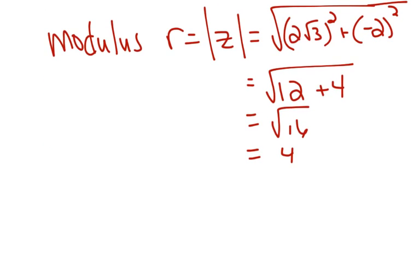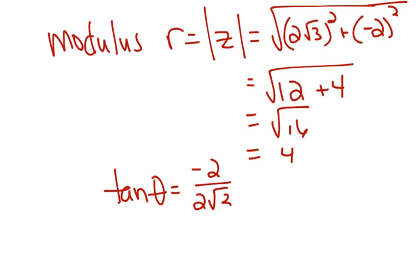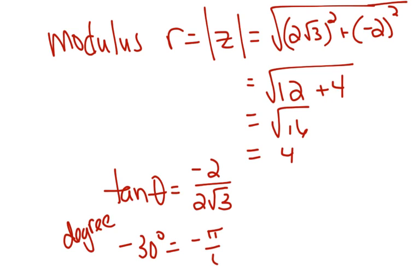Then I need to find what theta is, and the tangent of theta is going to be b over a. Put this in your calculator — do the inverse tangent of negative 2 divided by 2 square root of 3. I would put my calculator in degree mode, find the angle in degrees, and then change it to radians. The calculator gives negative 30 degrees, which is negative pi over 6. However, we don't use negative pi over 6; we use its 4th quadrant coterminal angle, which is 11 pi over 6.